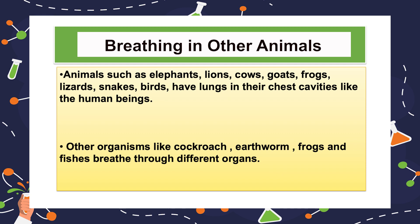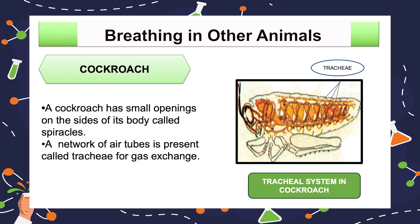We just finished the topic of breathing in human beings. The next topic is breathing in other animals. Animals such as elephants, lions, cows, goats, frogs, lizards, snakes, and birds have lungs in their chest cavities, like human beings. How do other organisms breathe? Do they also have lungs? Let us find out. A cockroach has small openings on the sides of its body — other insects also have similar openings.